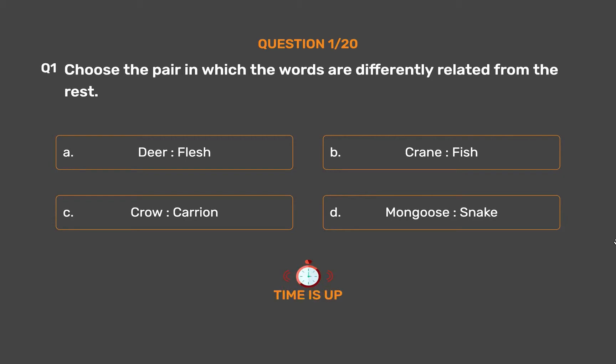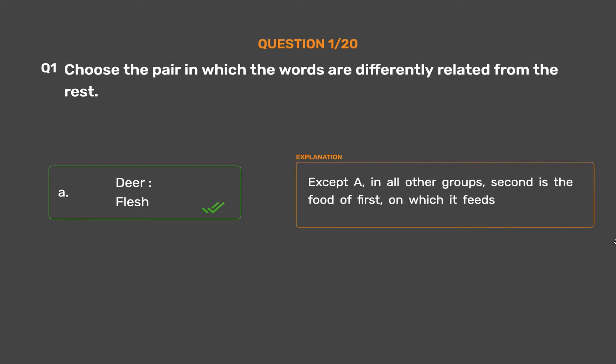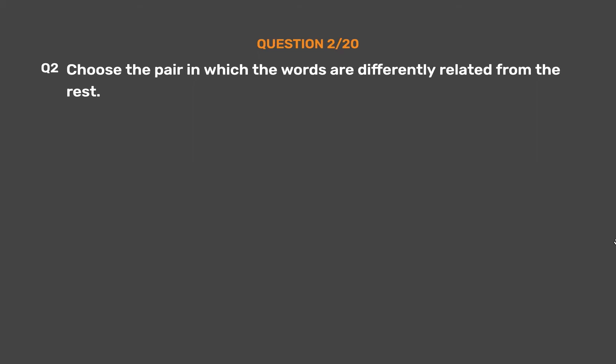The correct answer is Option A: Deer, Flesh. Except A, in all other groups, the second is the food of the first, on which it feeds.